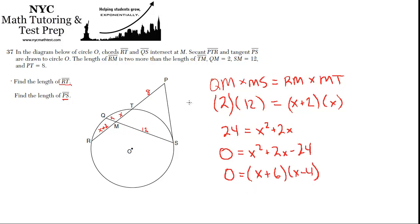So the values of X that would make this equation true are X equals negative 6 and X equals 4. In this case, one of the lengths is X. So X equals negative 6 doesn't make sense because we can't have a negative length. So we can throw that choice away and we can be sure that X equals 4.